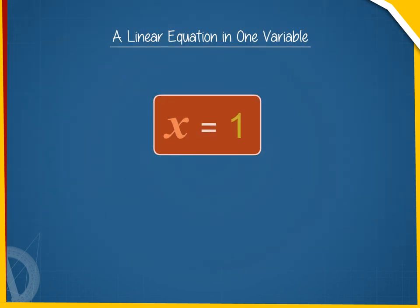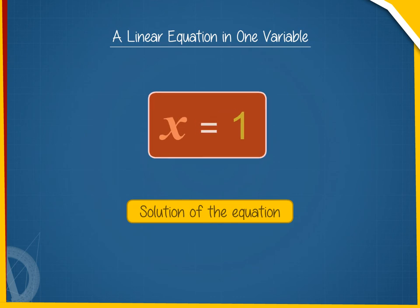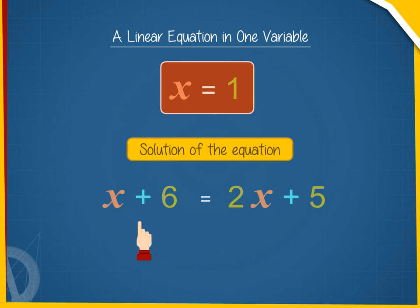The value of the variable for which the two algebraic expressions have the same value is called the solution of the equation. Thus, x equals 1 is the solution for the equation x plus 6 equals 2x plus 5.